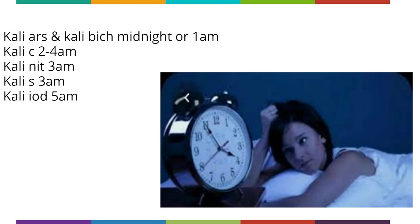Another characteristic and key feature of Kali is the 4am aggravation. Whenever this feature comes up in a case, this remedy must be considered strongly. Some specific aggravation times of different Kalis: Kali ars and Kali bichrome have midnight or 1am aggravation; Kali carb has 2-4am aggravation; Kali nitricum and Kali sulf have 3am aggravation; Kali iodine has 5am aggravation.